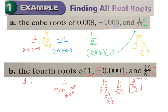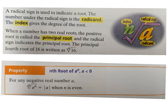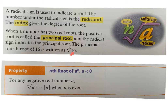Some terminology: a radical sign indicates a root. The number inside the radical sign is the radicand. The number indicating which root you're looking for is the index — just like an exponent tells you how many times to take a power, an index tells you what root you're looking for. When a number has two real roots, the positive root is called the principal root. Most of the time when given a real number with no variable, they mean the positive root. You'd consider the negative root only when solving something like x equals the square root of a value.